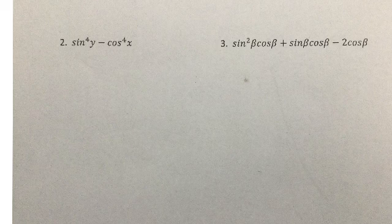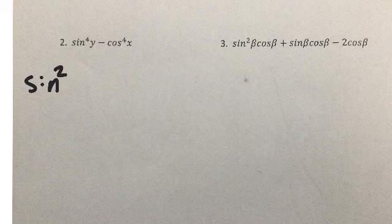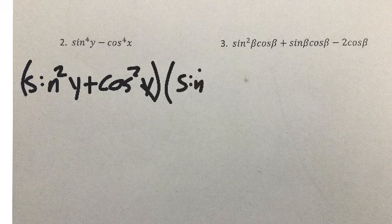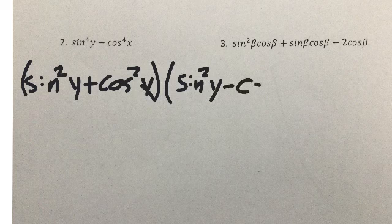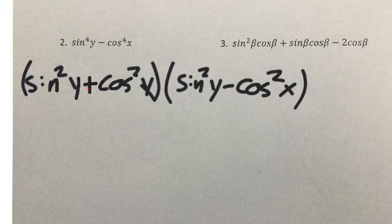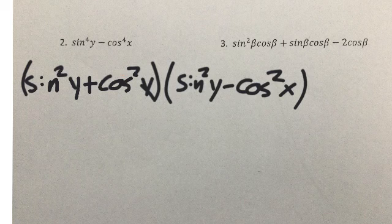So I can factor that to be sine squared of y plus cosine squared of x times sine squared of y minus cosine squared of x. Now, I've got to see, will it factor again? So right here, these two terms are both squared, but there's addition between them. We do not have a sum of squares to factor it down by, so this one is stuck.